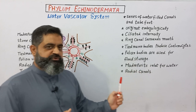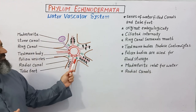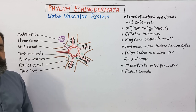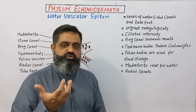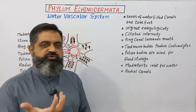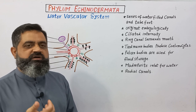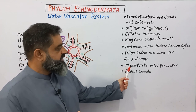Polian bodies are used for fluid storage. Along with this system, you can see small vesicle-like structures known as Polian bodies. These Polian bodies can store some type of fluid to help maintain the water vascular system.